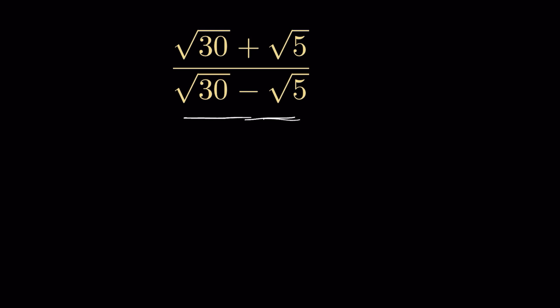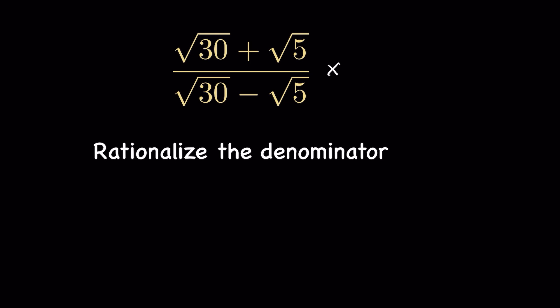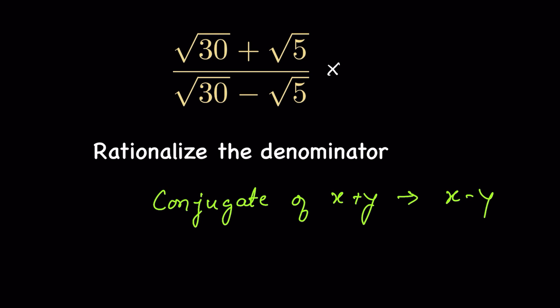For that, we need to rationalize the denominator. Consider multiplying it by one — there is no change if we multiply and divide by the same number, because both numbers cancel. Therefore, we multiply and divide by the conjugate of the denominator. The conjugate of (x + y) is (x − y).